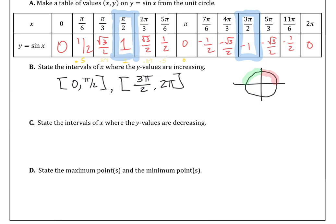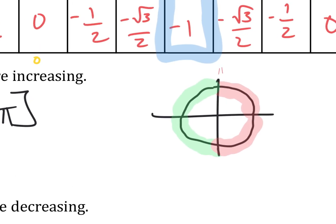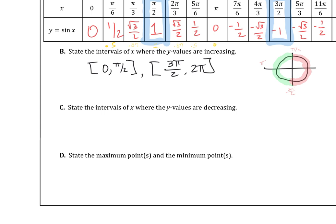In green, the y values are decreasing — that's through quadrant 2 and quadrant 3. So in quadrant 4 and quadrant 1, sine is increasing; in quadrant 2 and quadrant 3, sine is decreasing. The intervals of x where the y values are decreasing: that's from pi over 2 all the way to 3 pi over 2. All that green section on the unit circle represents the decreasing values of the sine function.